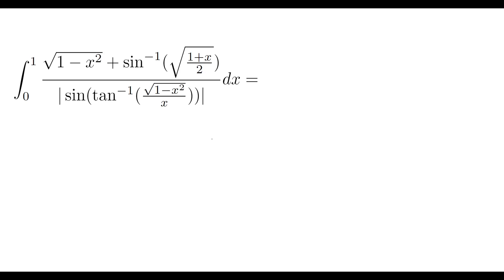Hello and welcome to today's video. We're going to have a quick look at this integral here. Our numerator is the square root of 1 minus x squared plus sine inverse, or arc sine, of the square root of 1 plus x on 2. Our denominator is the absolute value of sine of inverse tangent, or arc tan, of the square root of 1 minus x squared over x. We are integrating that with respect to x from bounds 0 to 1. Let's dive right in.